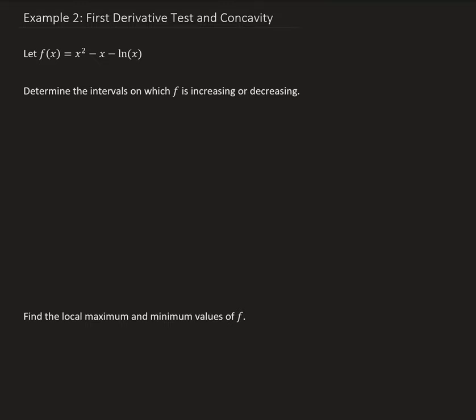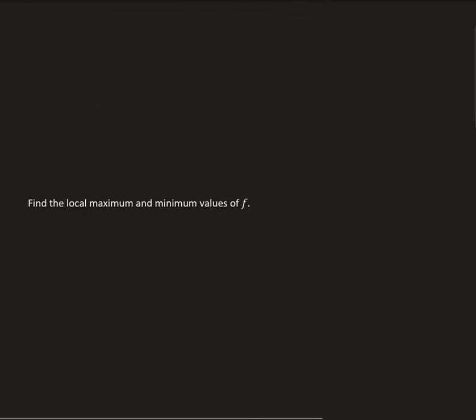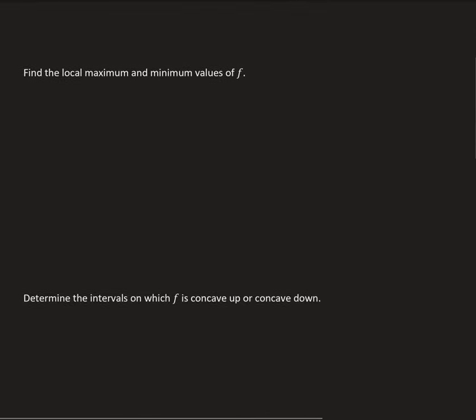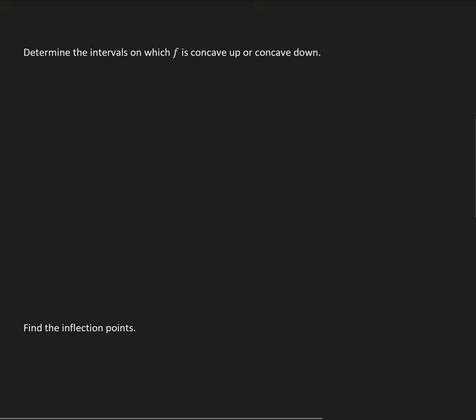In this example, we want to determine the intervals on which this function is increasing or decreasing. Then we're going to find the local maximum and minimum values of f using the first derivative test. And then we'll determine the intervals on which the function is concave up or concave down, and find the inflection points for this function.